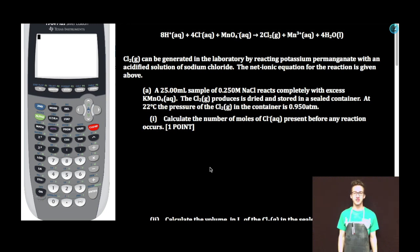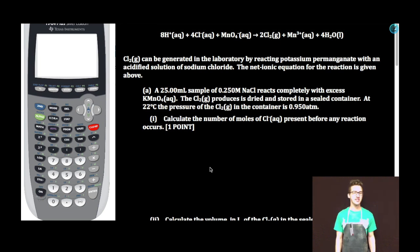All right, response time. Chlorine gas can be generated in the laboratory by reacting potassium permanganate with an acidified solution of sodium chloride. The net ionic equation for the reaction is given above.